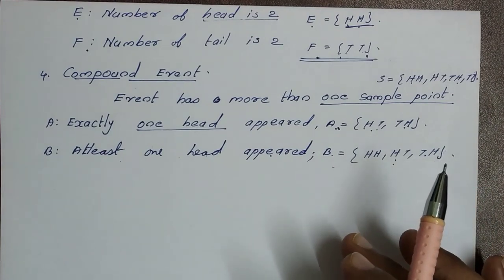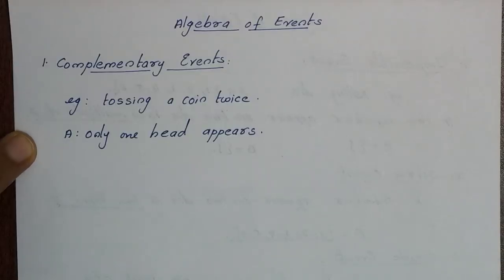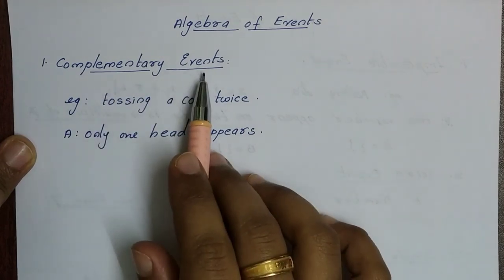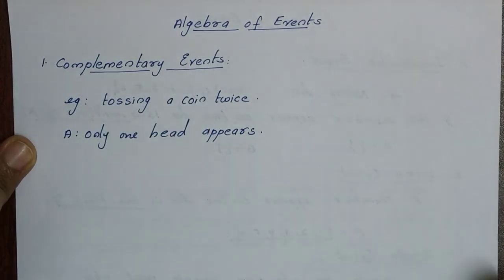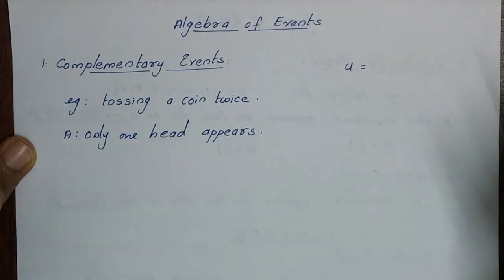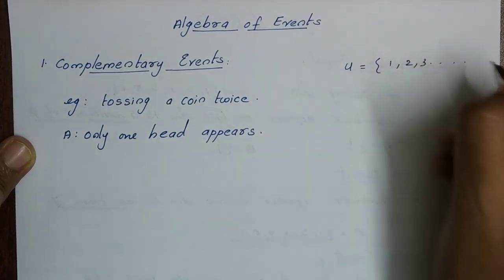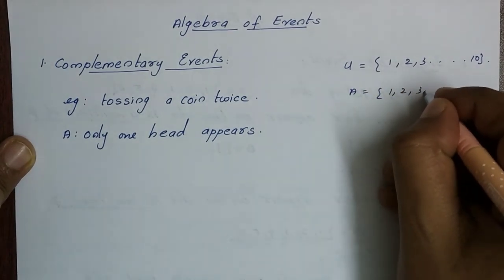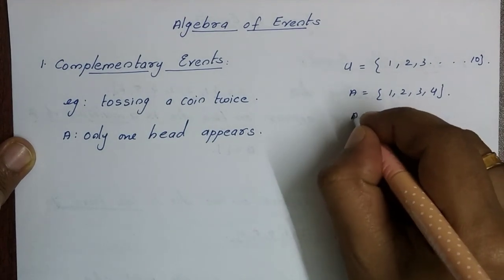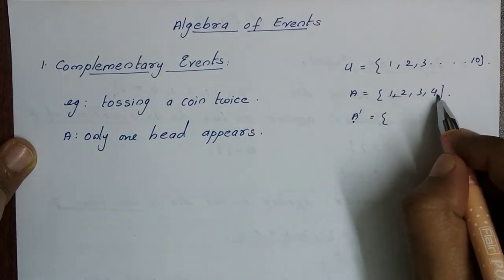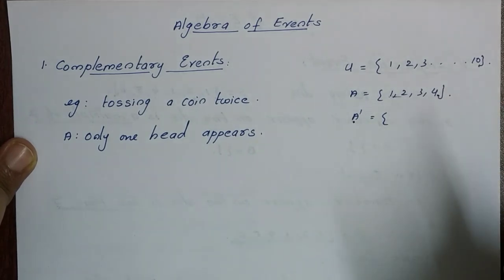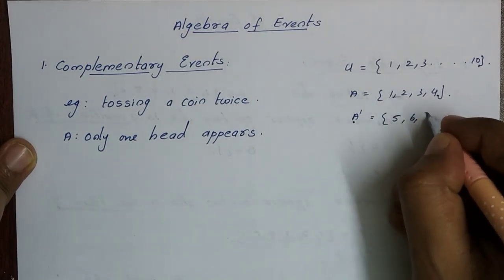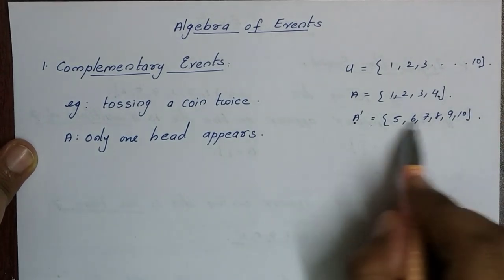Let's start the topic: algebra of events. The first is complementary events. For example, consider a universal set with elements 1 through 10. If set A equals {1, 2, 3, 4}, then A complement contains the elements not in A within the universal set, which are {5, 6, 7, 8, 9, 10}. This is the complementary element of A. The same concept applies to complementary events.